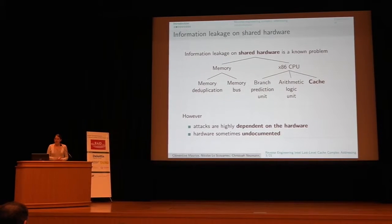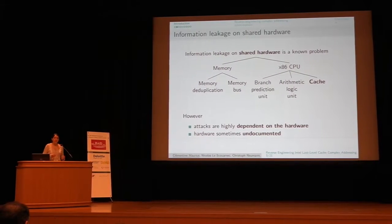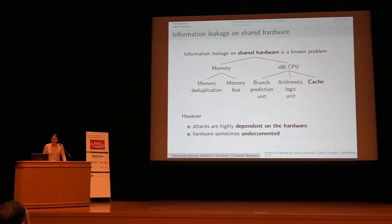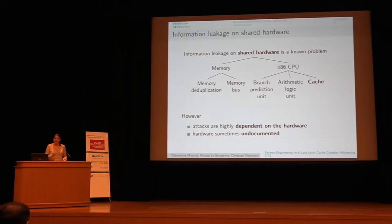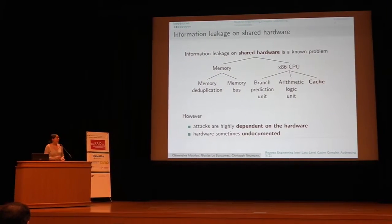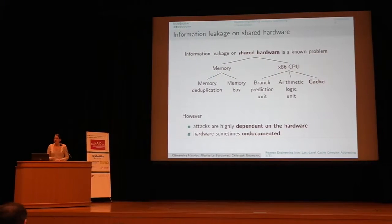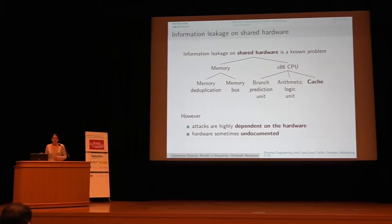I'm interested in information leakage. When you have processes that share the same hardware, even if there is software isolation like virtual machines or sandboxes, you can have information leakage between processes. For example, processes can share memory and use memory-based channels. They can also use the processor itself — the branch prediction unit, arithmetic logic unit, or the cache, which is the part I'm interested in.